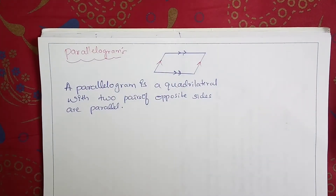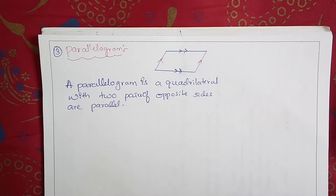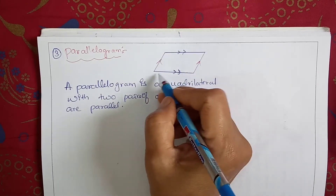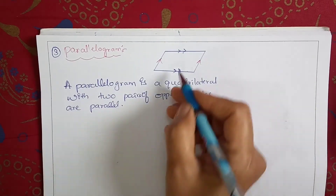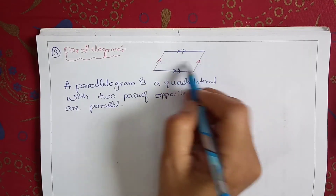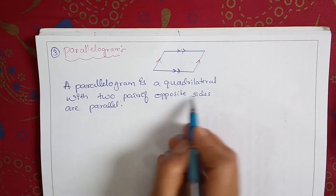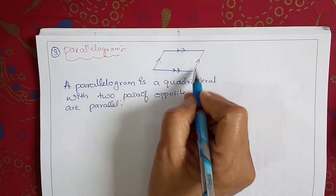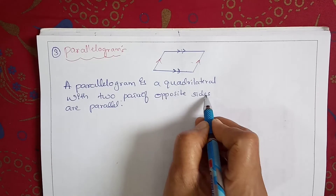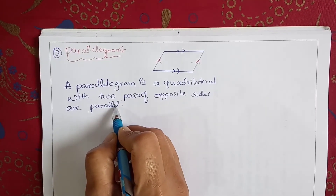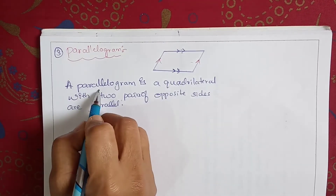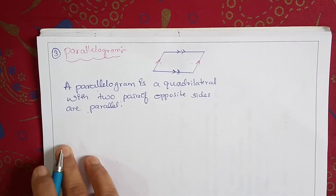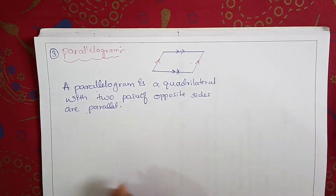This is the third kind of quadrilateral — it is a parallelogram. In a parallelogram, whatever you label it (ABCD or PQRS), two pairs of opposite sides are parallel. In a quadrilateral, if two pairs of opposite sides are parallel, then that quadrilateral is known as a parallelogram. Next we will also discuss the properties of a parallelogram.